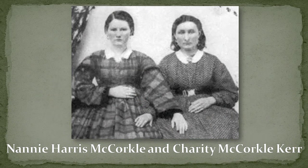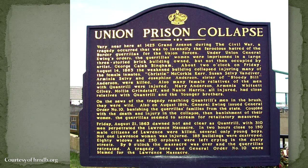Two of the women, Charity Kerr and Josephine Anderson, had been sisters of men who rode with Quantrill. Their brothers, John McCorkle and Bill Anderson, clamored for revenge. Anderson soon became known as Bloody Bill. He swore an oath to kill all Union soldiers he met thereafter, and for the rest of his life he carried with him a long silk scarf upon which he tied a knot for each of his kills. Upon his own death, that scarf had 53 knots.